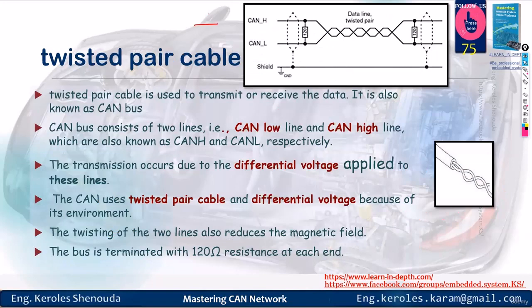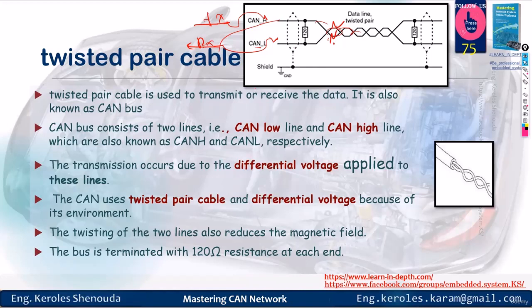The transceiver converts the transmit wire, which is single-ended, to send its data over CAN High and CAN Low. It also converts CAN High and CAN Low back to the receive wire (RX), so you can read what has been sent. The CAN High and CAN Low wires are twisted together so that any incoming noise affects both wires equally. When you consider the difference between them, the noise effectively cancels out, ensuring the integrity of the transmitted data.